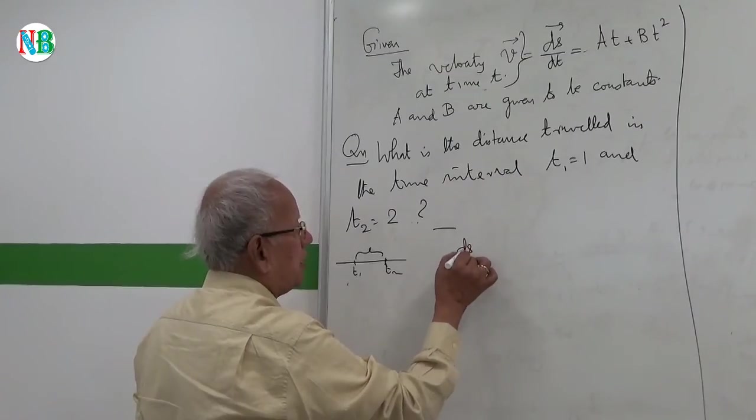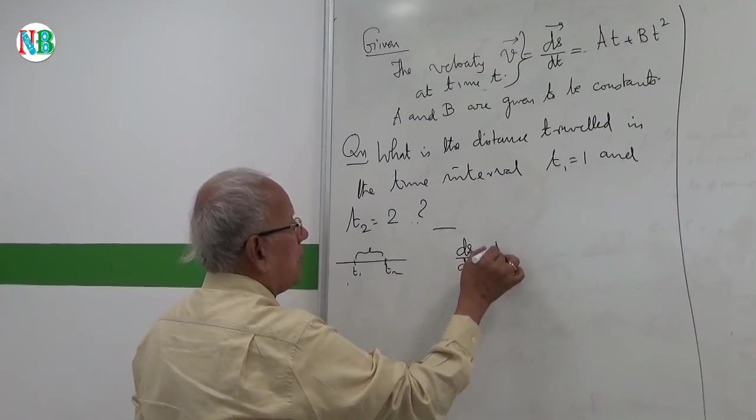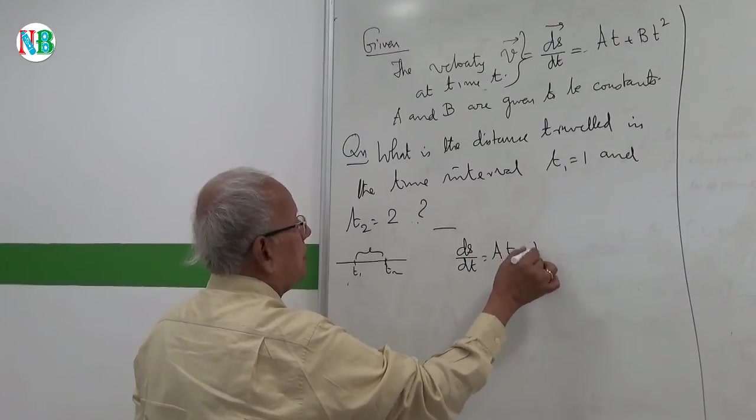So I am going to start with ds by dt equals AT plus BT square.